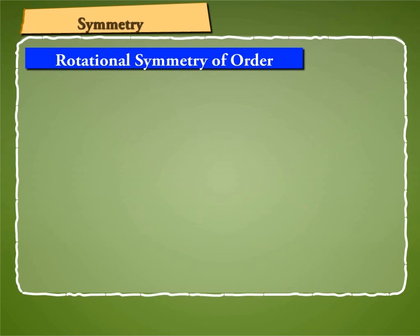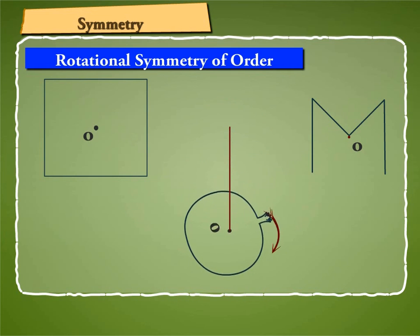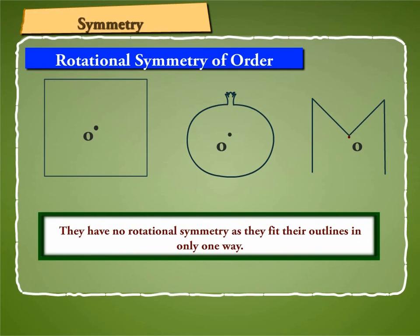There are some figures which when rotated about the center O, fit onto themselves only when they are back to their original positions, that is, after they have made only one complete round. We say that they have no rotational symmetry as they fit their outlines in only one way. Some of the examples are given on the screen.